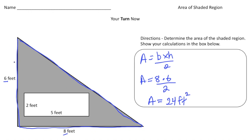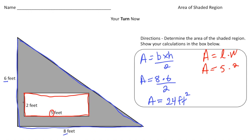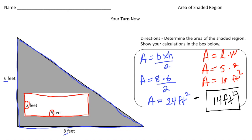That's the area of the entire shape. Now I need to remove the area of the rectangle. Using area equals length times width, the area is 5 times 2, which equals 10 square feet. Now, the most important part — to get the area of the shaded region, I subtract 10 square feet from 24 square feet, and we get 14 square feet. That's the answer. How did you do?